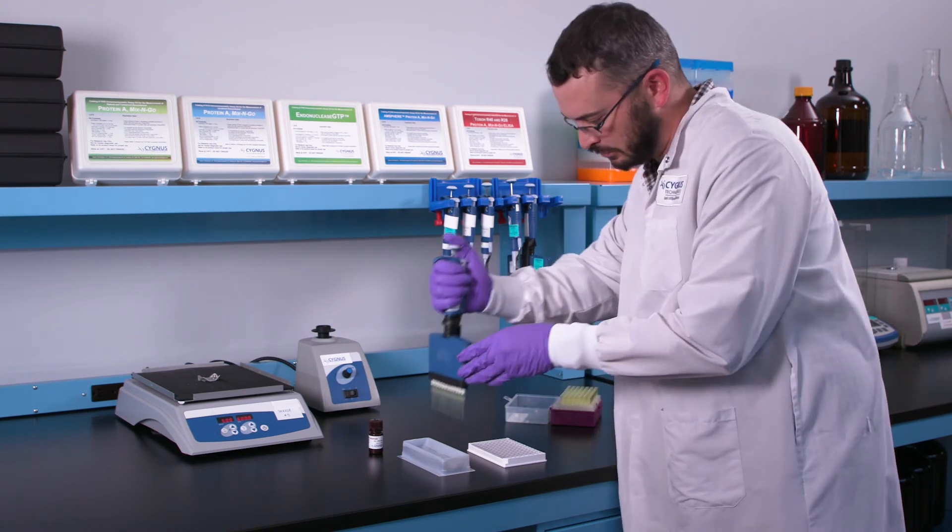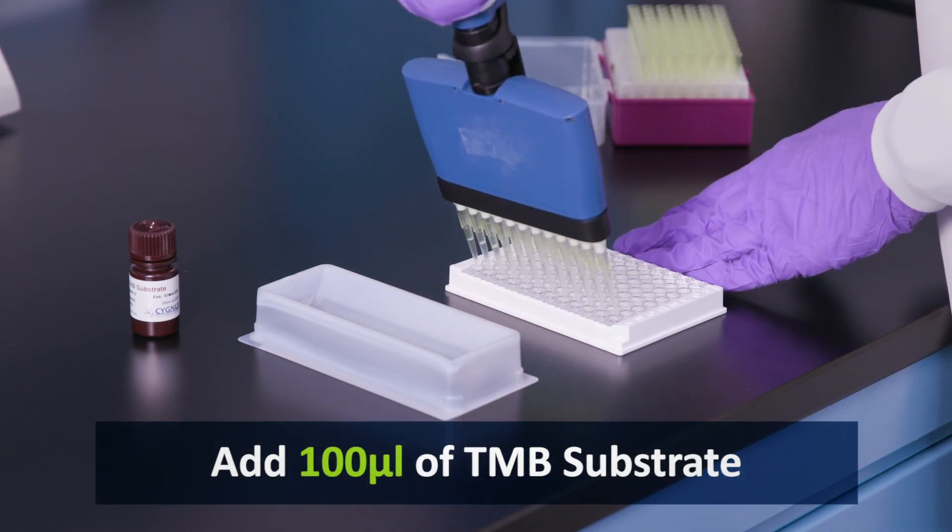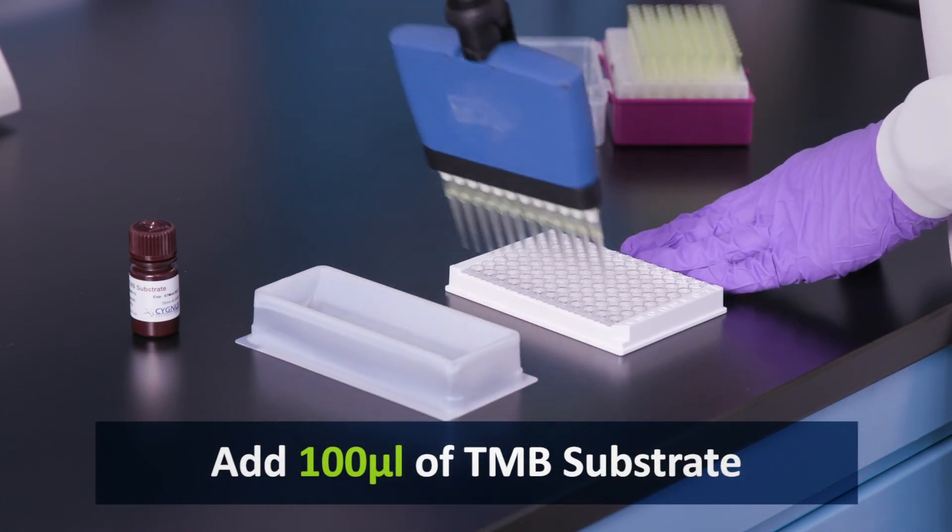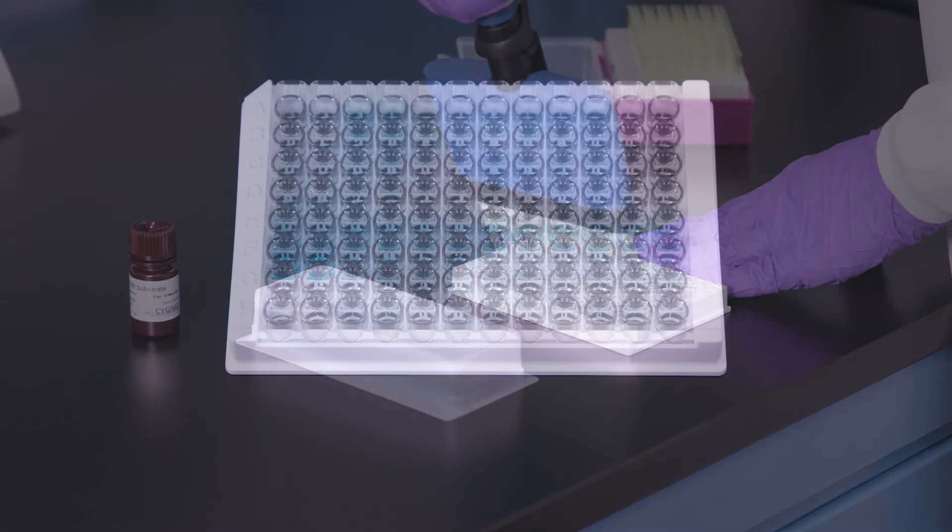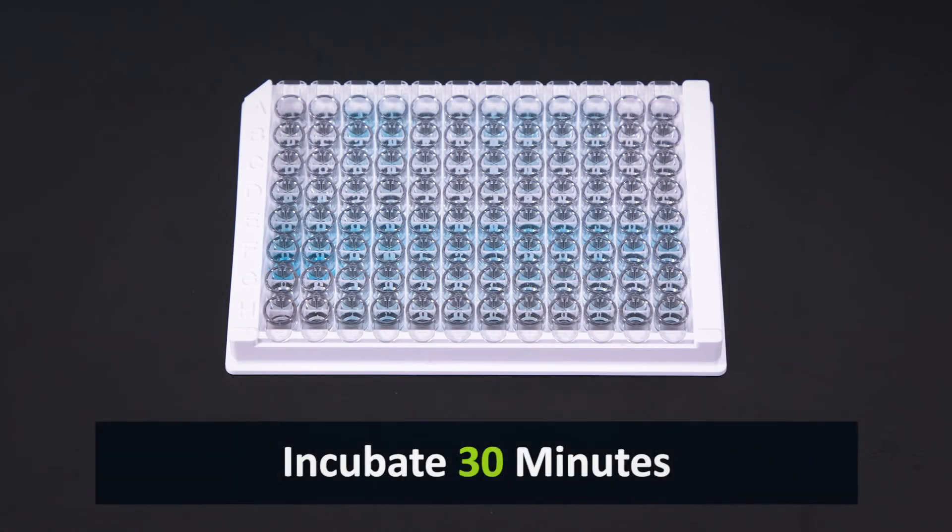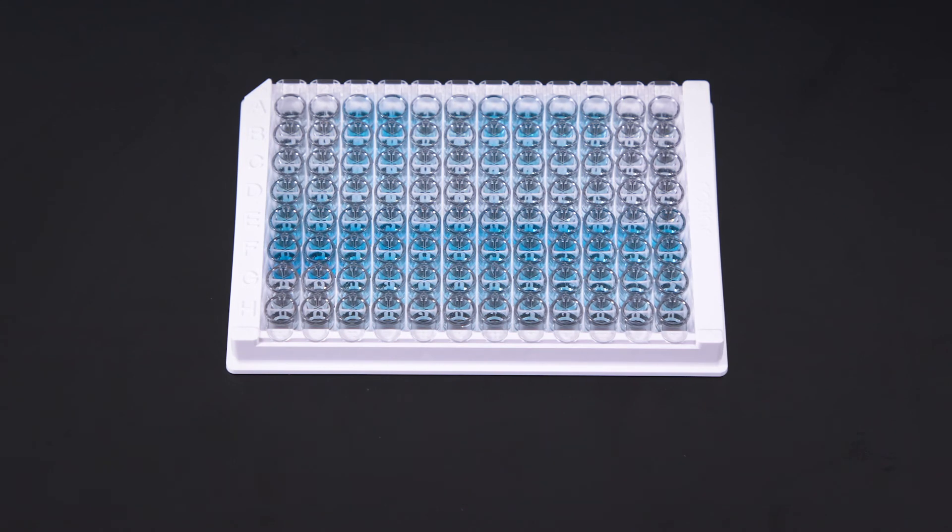Immediately after completing the washing process, pipette 100 microliters of TMB substrate into each well. Then, incubate on your bench at room temperature for 30 minutes. Do not shake during this 30 minute substrate incubation period, as it may result in higher backgrounds and less precision.